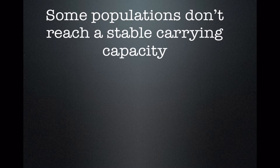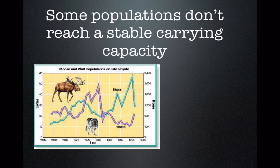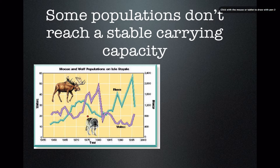Some populations don't reach a stable carrying capacity — there are always exceptions in biology. For example, here we have two animals: a moose and a wolf. The moose is a prey species. Wolves hunt in packs and feed on moose, among other things. If you look at the population growth curves of these two animals...